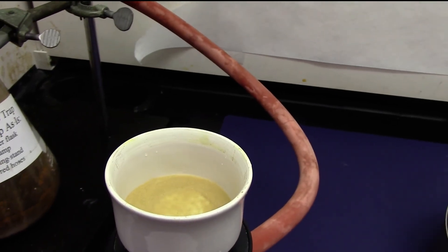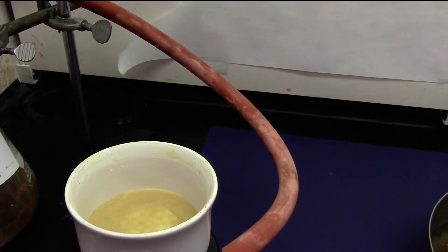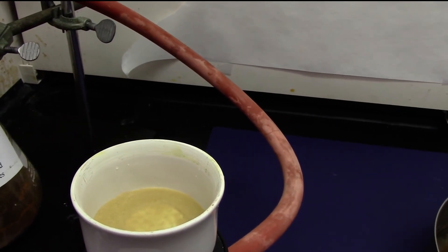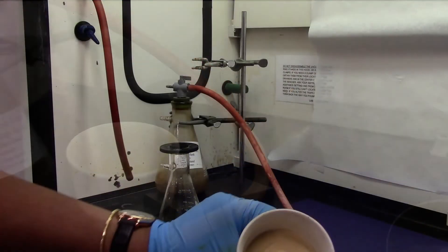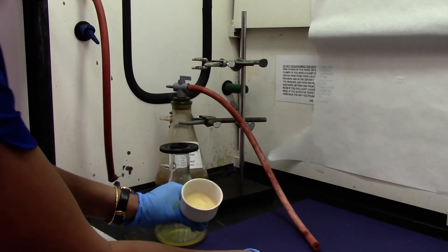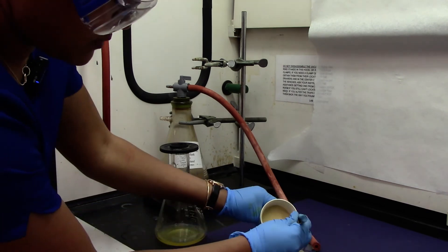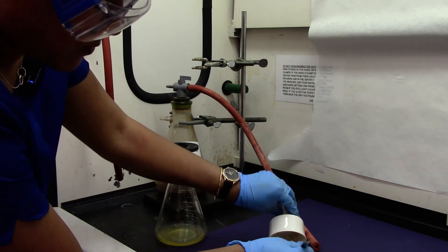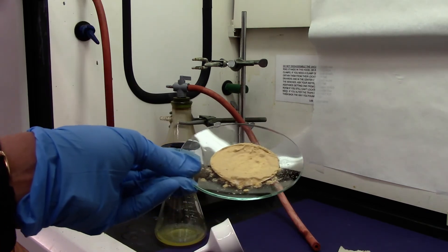This is how the product looks like—yellow crystals. Let it sit in the vacuum for a few minutes before you weigh it out. Scoop up the product into the watch glass and weigh our product.